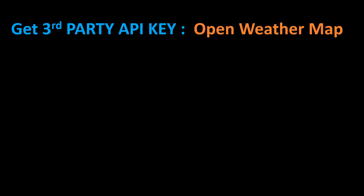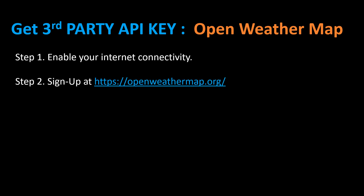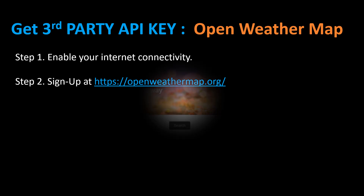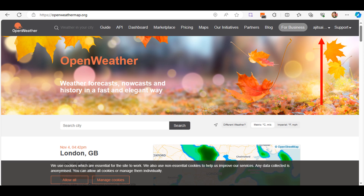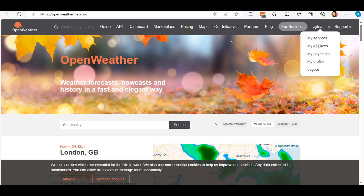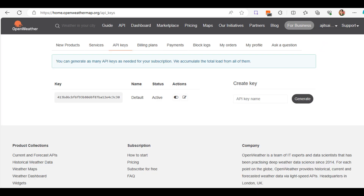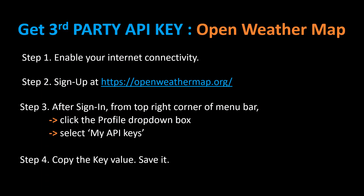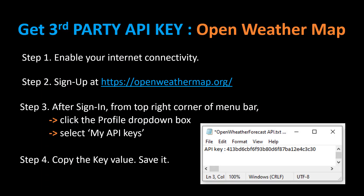Let's next prepare for the application coding process. We need to get a third-party API key — I am going to use the OpenWeatherMap online service. Step one: enable your internet connectivity. Step two: sign up at the openweathermap.org website. Step three: after signing in, from the top right corner of the menu bar, click the profile dropdown box, then select 'My API Keys.' Step four: copy the key value and save it, like how I have saved it here in a text file.